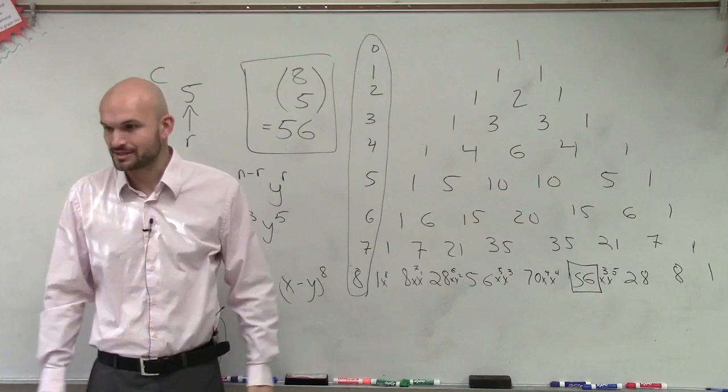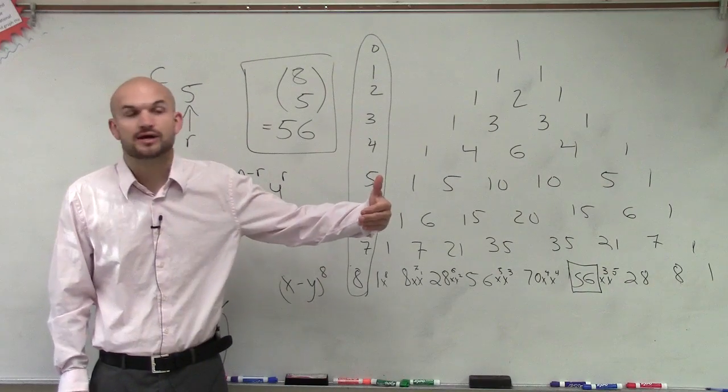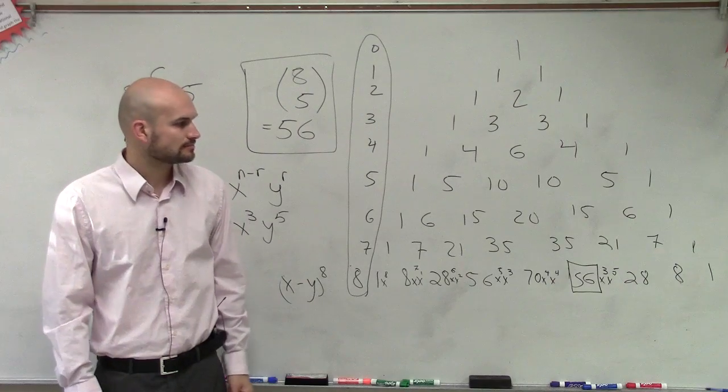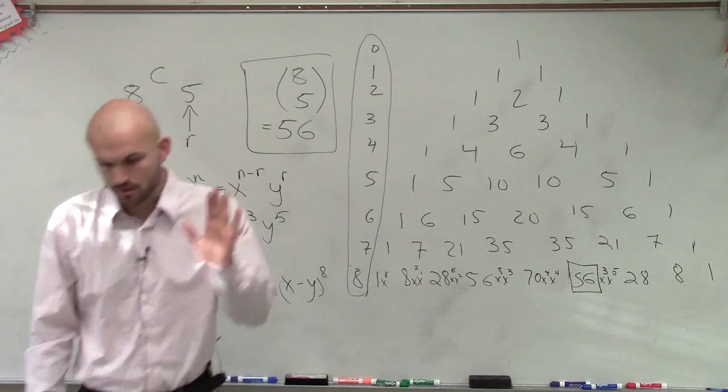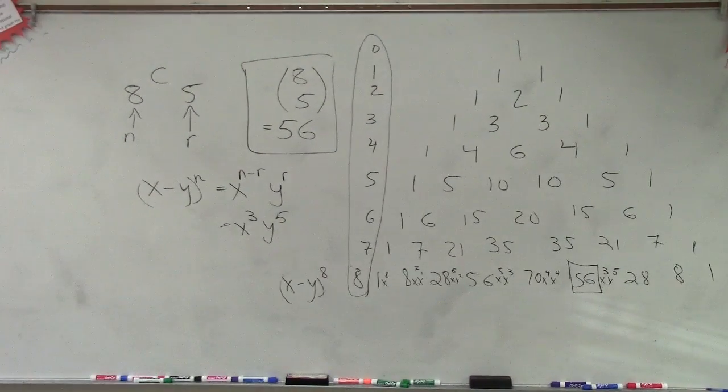8 choose 5, and you can quickly easily get 56, where I'd have to create Pascal's Triangle. But I asked you to use Pascal's Triangle. And I showed you guys, last class period, how to plug that in your calculator.